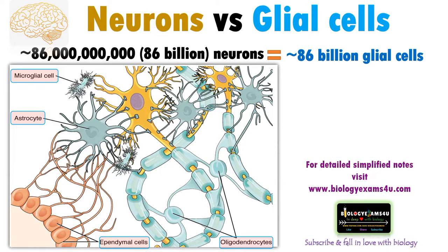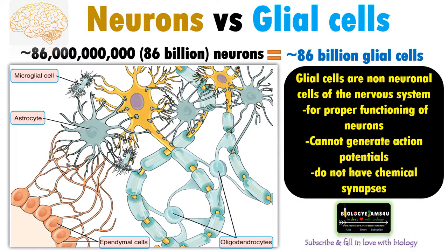Previously it was believed that glial cells are meant for protection and structural support. Now it is clear that they also have many prominent functions in information transfer. In short, glial cells are non-neuronal cells of the nervous system. They are responsible for the proper functioning of neurons. They cannot generate action potentials like neurons — they have resting potential — and they do not have chemical synapses.